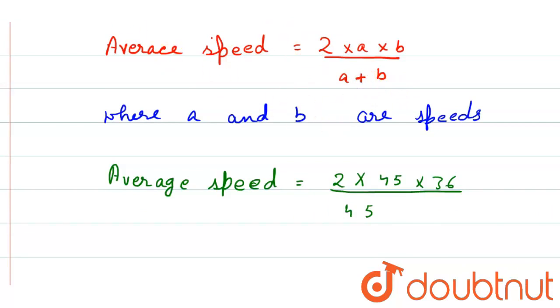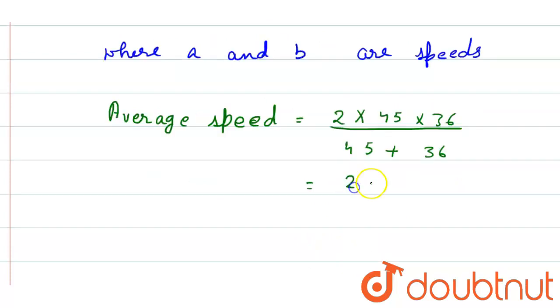So I made a mistake there. So now we can write 45 plus 36, that is equals to 2 into 45 into 36 by 81.